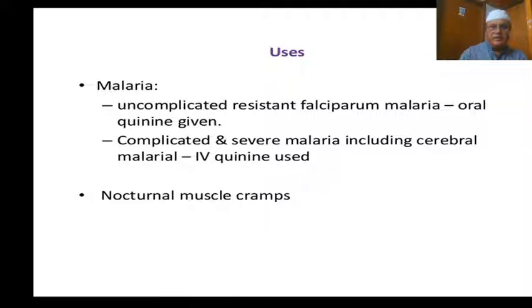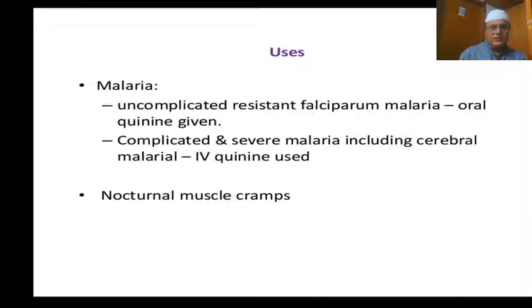Uses of quinine: uncomplicated resistant falciparum malaria — oral quinine is given. Complicated and severe malaria including cerebral malaria — IV quinine is given. Other indication: nocturnal muscle cramps.